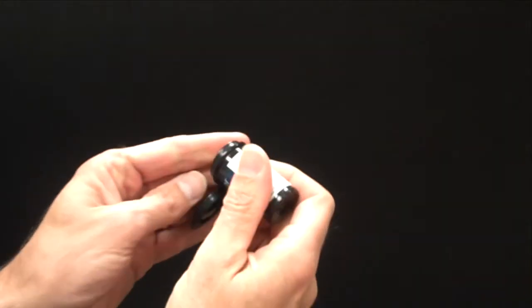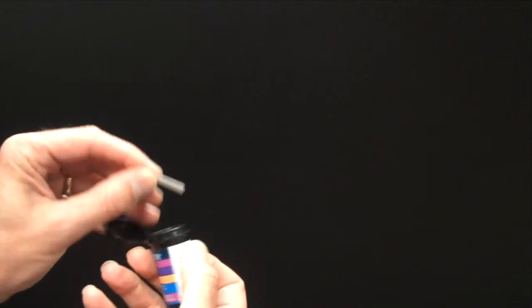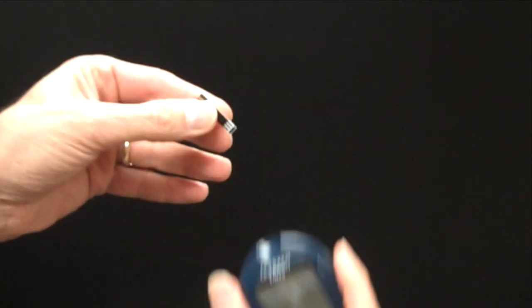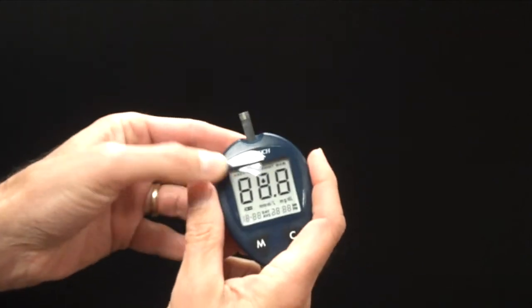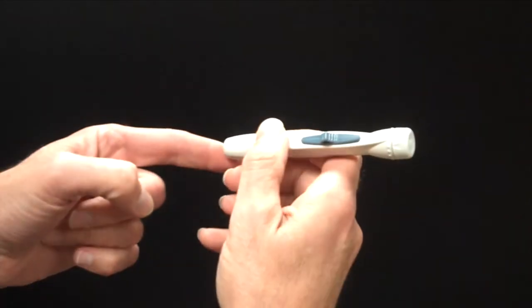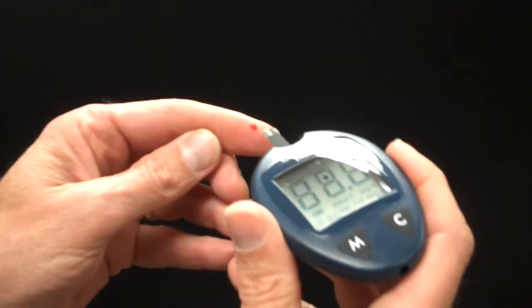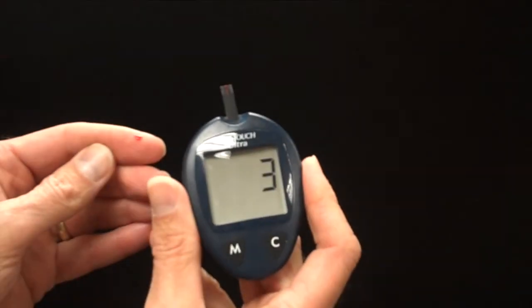This device uses disposable test strips that are inserted into the meter. The user applies a sterile lance to draw some blood. The tip of the test strip draws up some sample by capillary action.